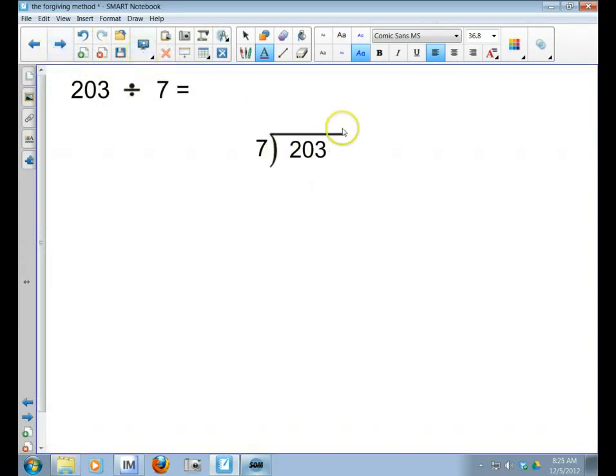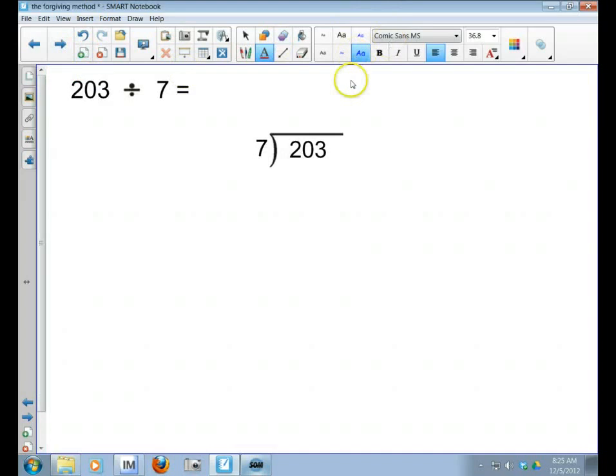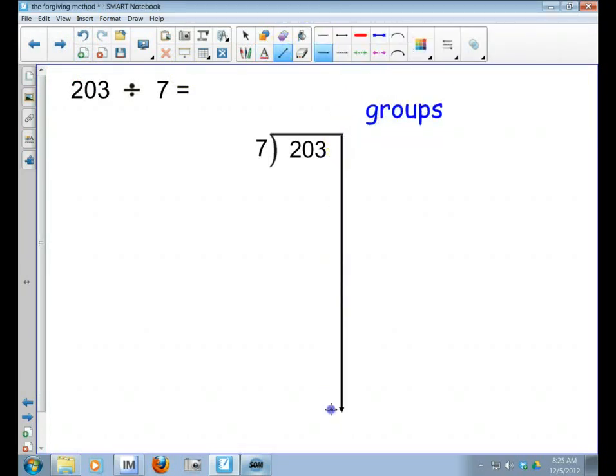Now I'm going to show you how to do the forgiving method, and keep in mind that whatever my answer is times 7 is going to be 203. So I'm going to start with putting the word 'groups' over here, and then I'm going to draw a line down the back of the division sign. So I've got my divisor is my 7 that's on the outside, my dividend is 203 that's the number we're dividing, that's on the inside.